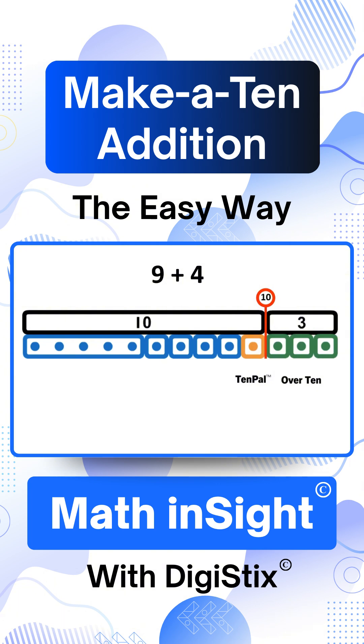Then, we add the number over 10, which is 3. We know that 10 plus 3 equals 13. So, 13 is the total in the addition problem 9 plus 4.